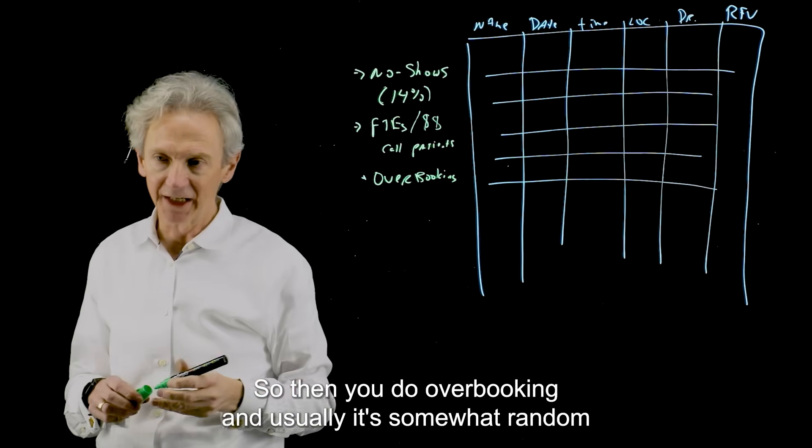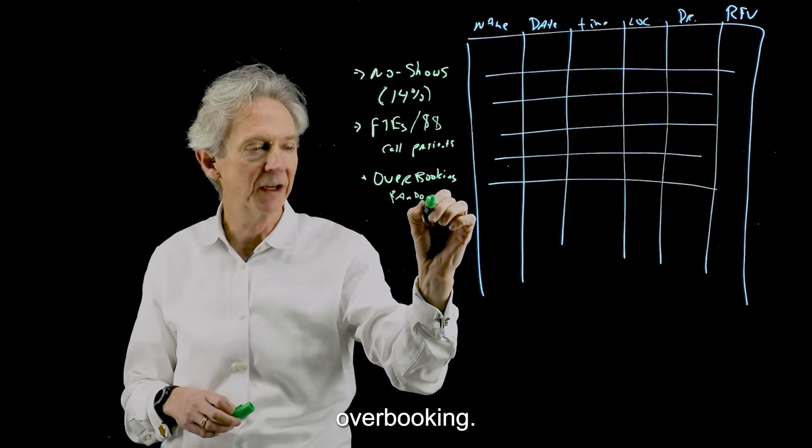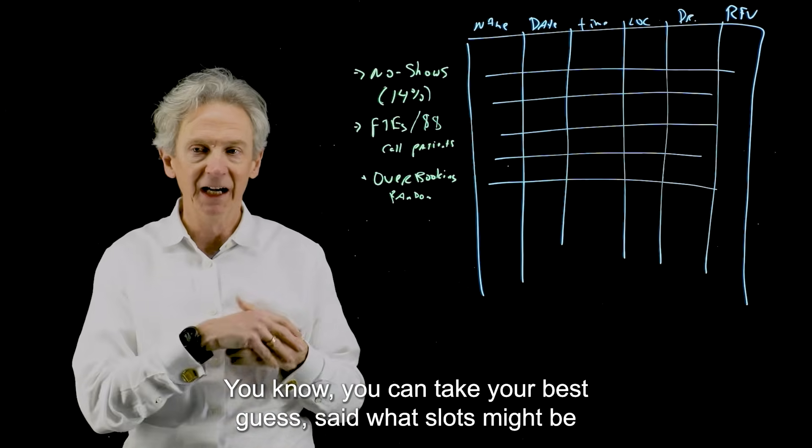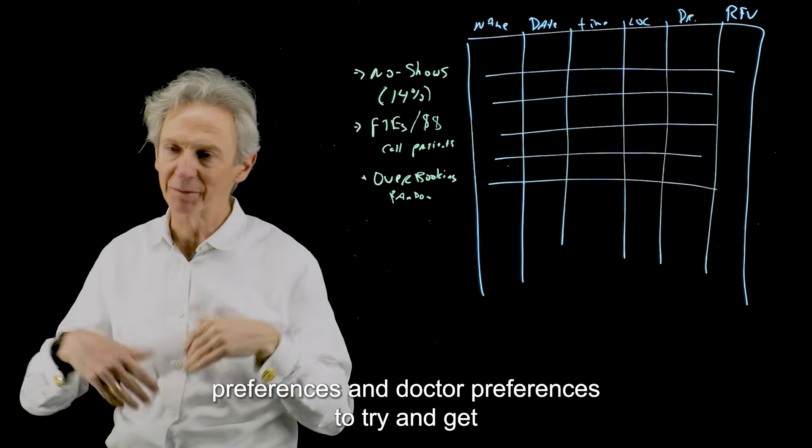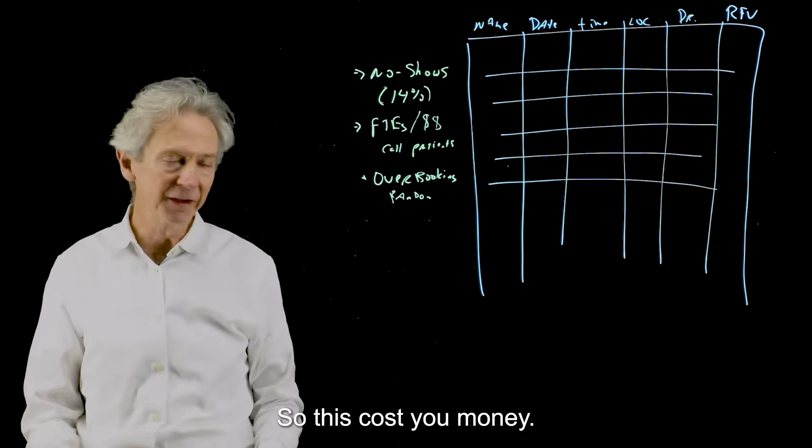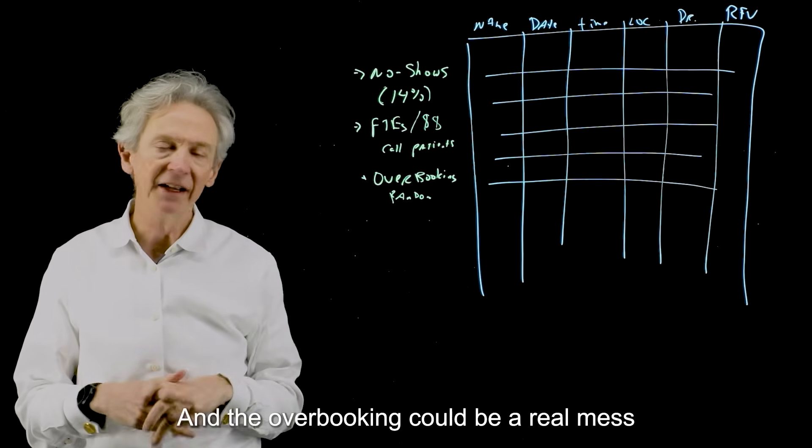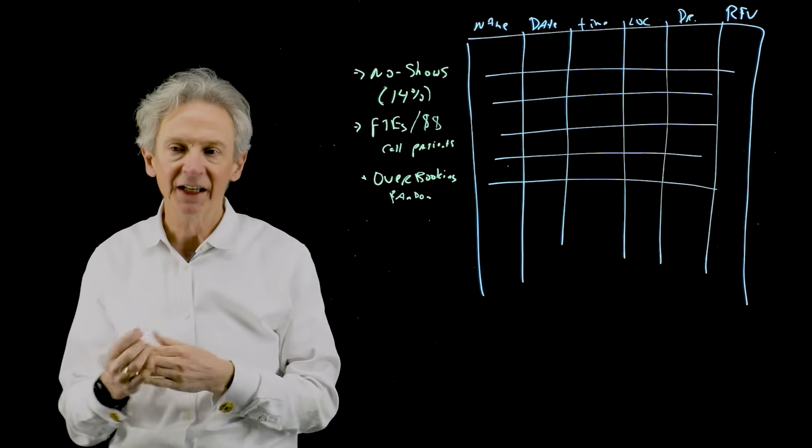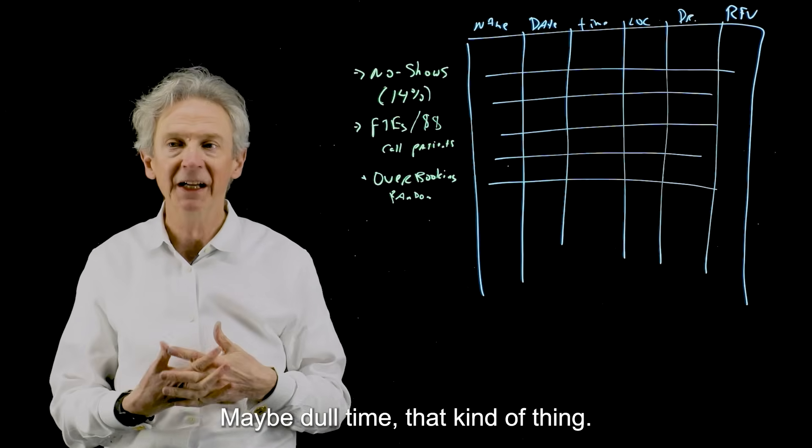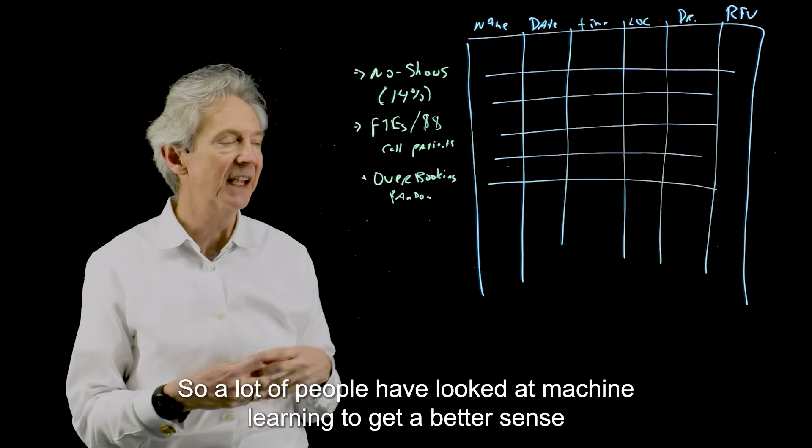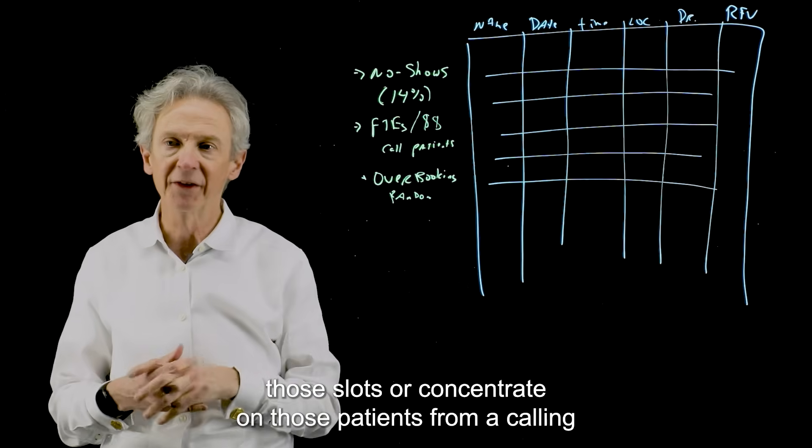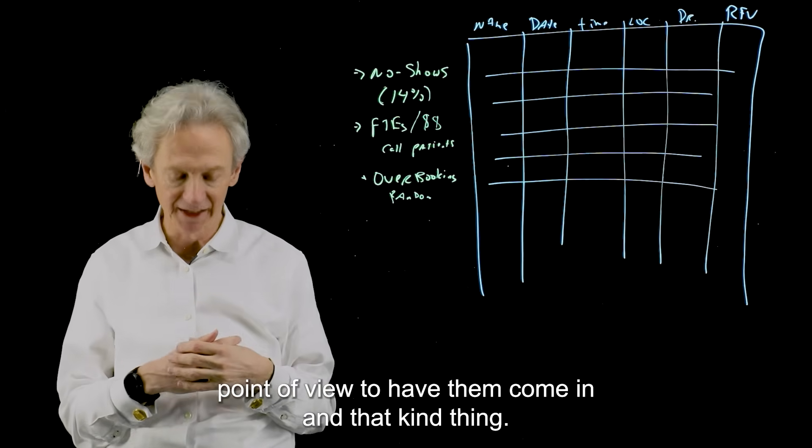So then you do overbooking. And usually it's somewhat random overbooking. So you're going to overbook the day. You can take your best guess at what slots might be best to overbook or just take advantage of patient preferences and doctor preferences to try and get as many people into the building as possible. So this costs you money, it's lost revenue. And the overbooking could be a real mess in terms of waiting time for patients, overflow situations, maybe dull time, that kind of thing. So a lot of people have looked at machine learning to get a better sense of when patients aren't going to show up and to maybe overbook in those slots or concentrate on those patients from a calling point of view to have them come in.